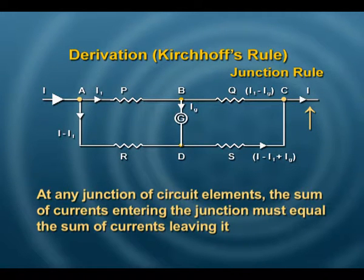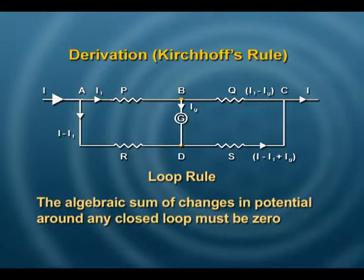What is the second rule? The second rule is a loop rule which says that if you have a loop like A, B, D, A or another loop B, C, D, then the potential drop across it is going to all add up to a 0 value.